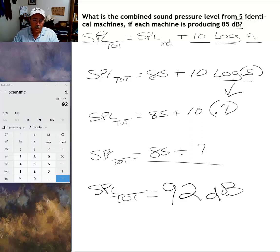92 decibels is the combined sound pressure level produced by these five machines. And that's it—pretty easy formula to use, can be handy. You may need it in the workplace, and you may see it when you take ASP/CSP certification exams.